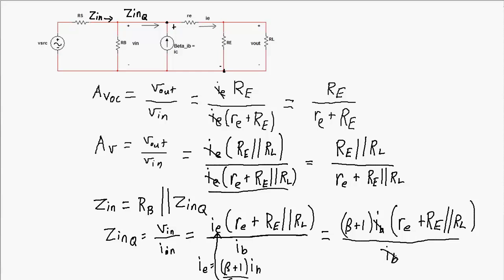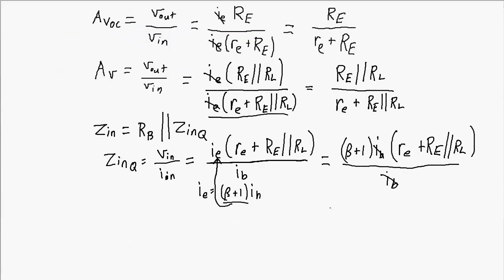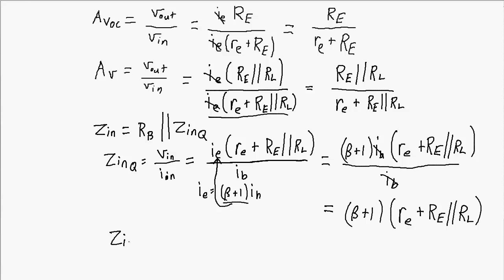The IB terms in numerator and denominator cancel, leaving the impedance looking into the transistor as (β + 1) × (re + RE ∥ RL). Therefore the overall input impedance of the common collector amplifier is RB in parallel with (β + 1) × (re + RE ∥ RL).